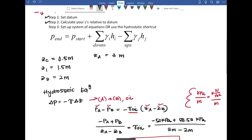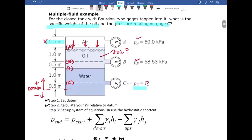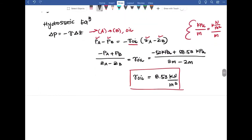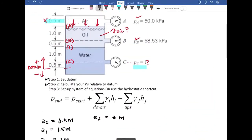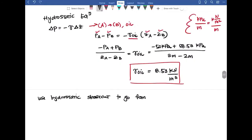So in this next step, it says now we want to solve for the pressure reading at gauge C. So what I'm going to use is I'm actually going to use the hydrostatic shortcut. So we can use a hydrostatic shortcut to go from A to C.